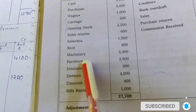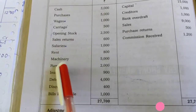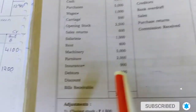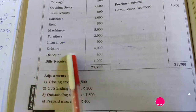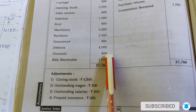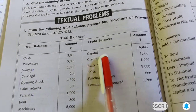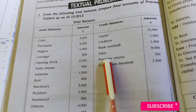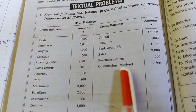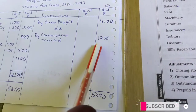Next, machinery and furniture go to the asset side of the balance sheet. Insurance: only the adjusted insurance amount goes to the P&L account; the balance goes to the balance sheet. Discount: discount also goes to the P&L account — discount is 400. Bills receivable goes to the asset side of the balance sheet. Capital, creditors, bank overdraft: these three go to the liability side of the balance sheet. Purchase returns and sales returns already handled. Commission received goes to the P&L account credit side: commission received 1,200.